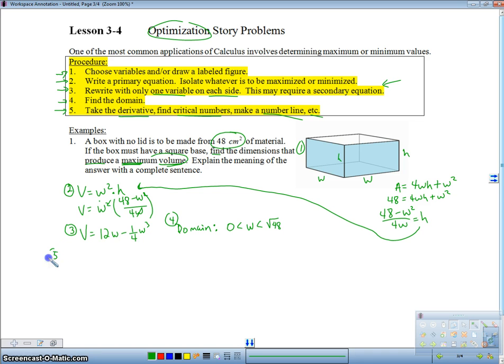So let's do number five now. We're going to take the derivative. V prime is 12 minus 3/4 W squared. Notice that I did not take the derivative implicitly like I did in related rates. This time we're doing explicit. Set it equal to zero. Solve for W. W squared. I'm going to subtract 12, multiply it by 4/3, and I'm going to get 16,